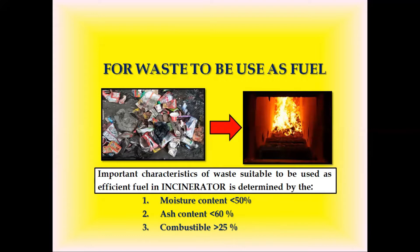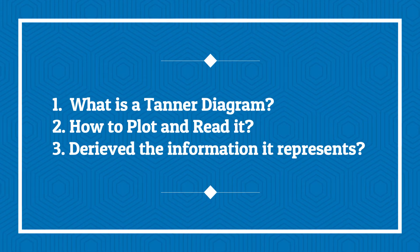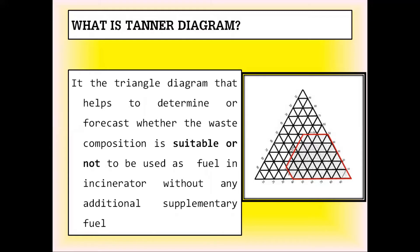This is where the tenor diagram comes into play. By definition, a tenor diagram is a triangle diagram that helps to determine or forecast whether the waste composition is suitable to be used as fuel in an incinerator without any additional supplementary fuel. This triangle shown here is actually the tenor diagram — in simple words, it helps determine whether a municipal solid waste is feasible to be fed into an incinerator as fuel or not.